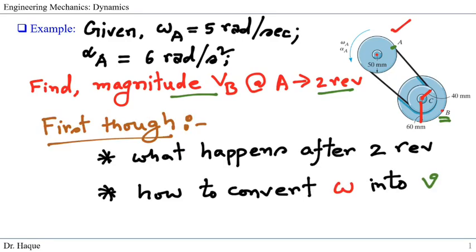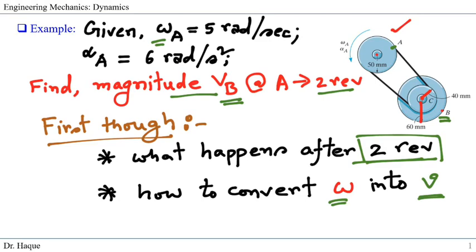The first thing to focus on is that the problem asks what will happen after 2 revolutions, so we need to focus on those 2 revolutions. Since we are looking for the final magnitude of the velocity but the given quantity is angular velocity, we need to figure out how to convert the angular velocity to linear velocity. Also, information is given for pulley A, but we need to find the velocity at pulley B, so we need to transfer the information between pulleys.